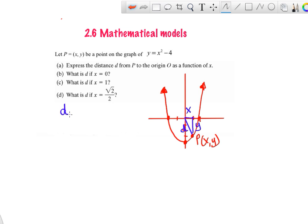So your distance squared would be x squared plus y squared. So then your distance becomes the square root of x squared plus y squared. And although that is a model, unfortunately it doesn't quite put it in terms of x yet. But we do know that y is x squared minus 4.